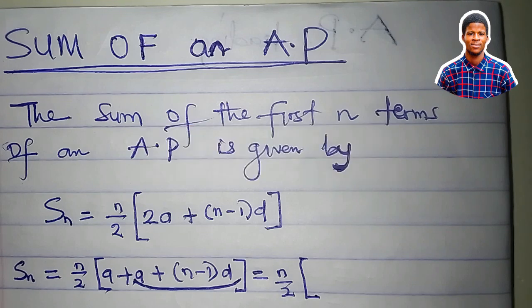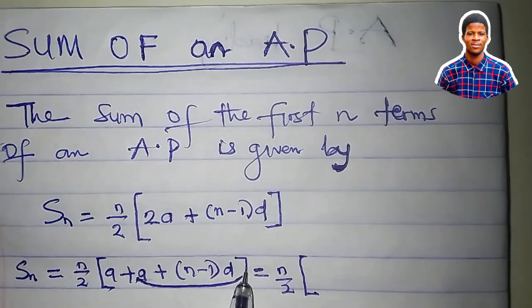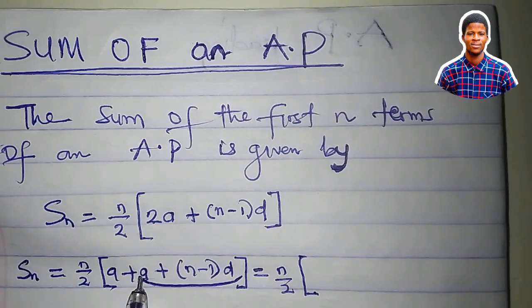We said that nth term and last term are the same. So u_n equals this, l, which is last term, is also equal to this.